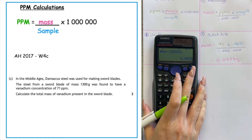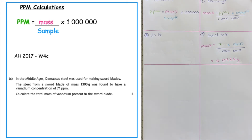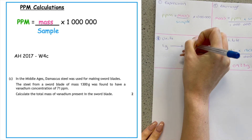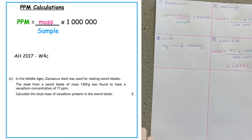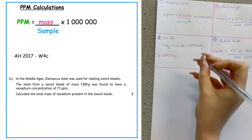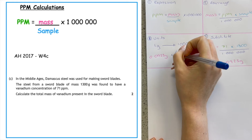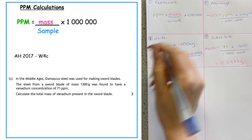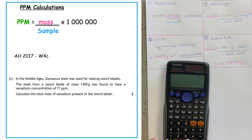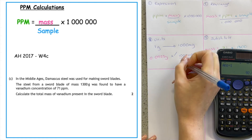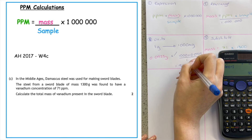The question doesn't ask for milligrams, but if we wanted to convert: one gram equals one thousand milligrams. We have 0.0923 grams, so cross multiplying — one thousand times 0.0923 divided by one — gives 92.3 milligrams.